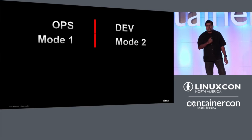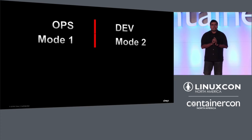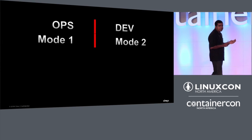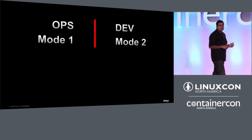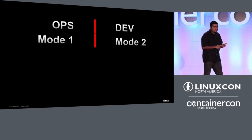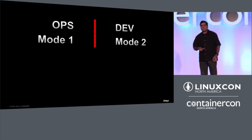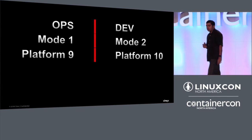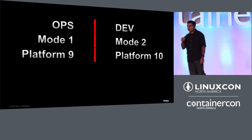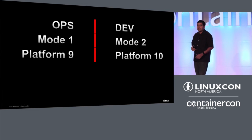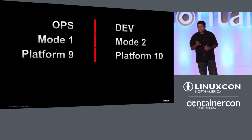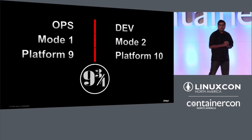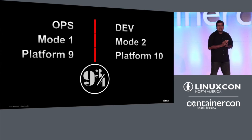I was talking to another customer and he scoffed at me. He said, "Mode one — if you start counting from mainframes to client-server to all the other transitions we've gone through, it's not mode one or mode two. It's more like platform nine or ten that we're on right now." And that was my opportunity to say, "How about a platform nine and three quarters in the middle?"